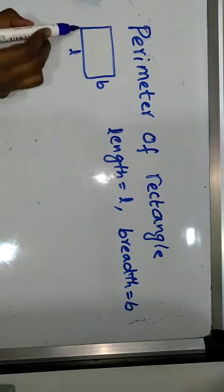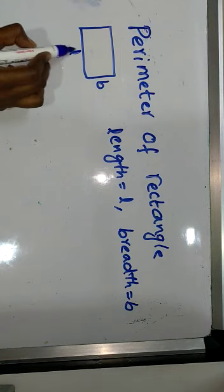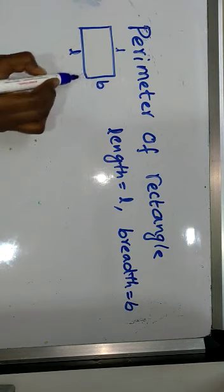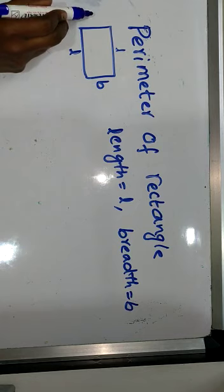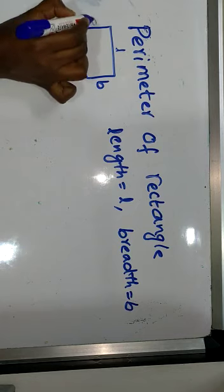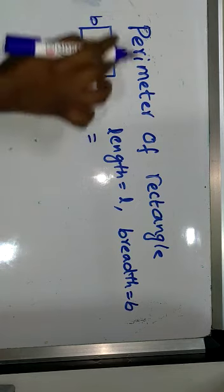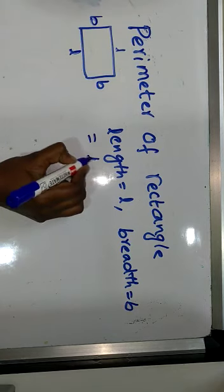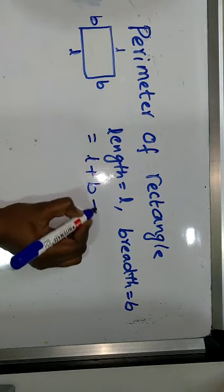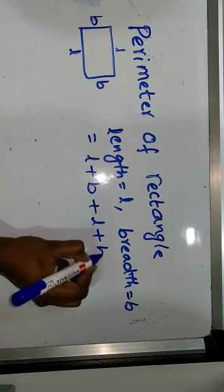So if this is L, the opposite side is also L. If this is B, this side is B. What is perimeter? Sum of all the sides. Let's write length plus breadth plus length plus breadth.